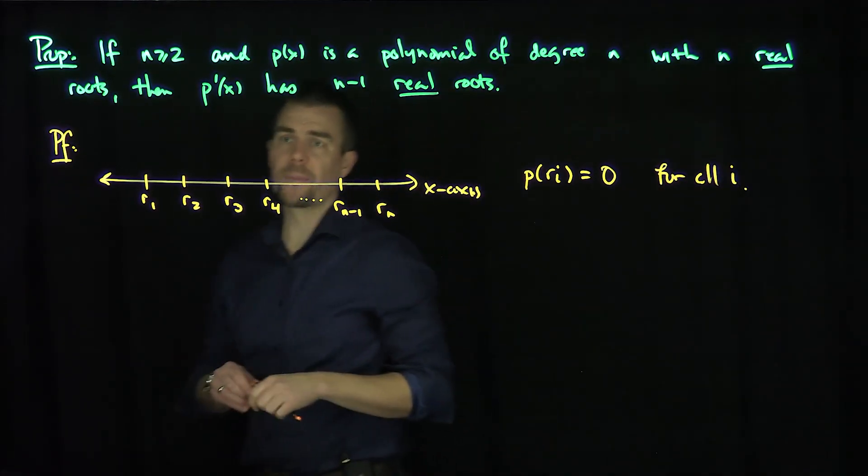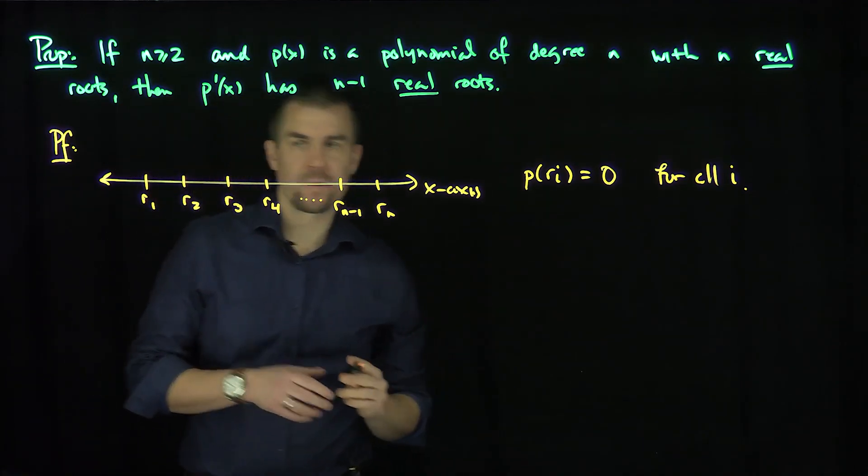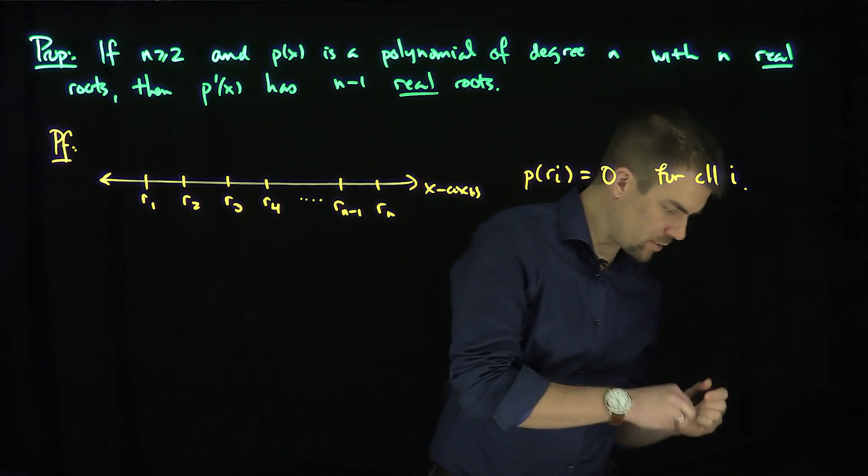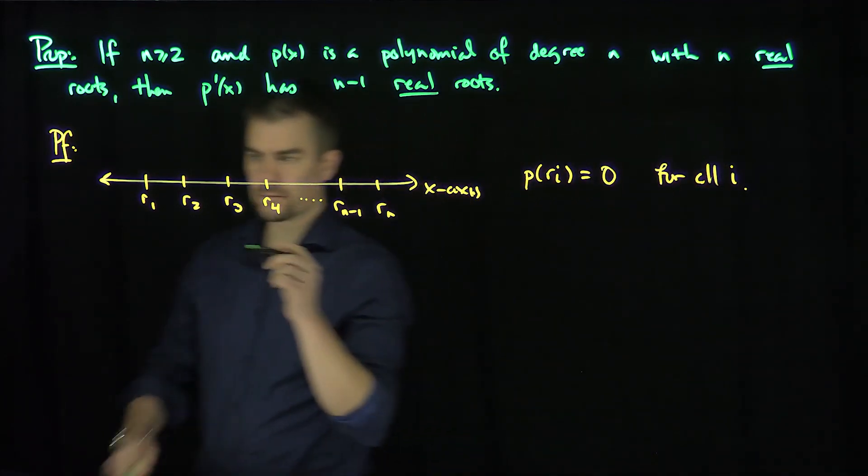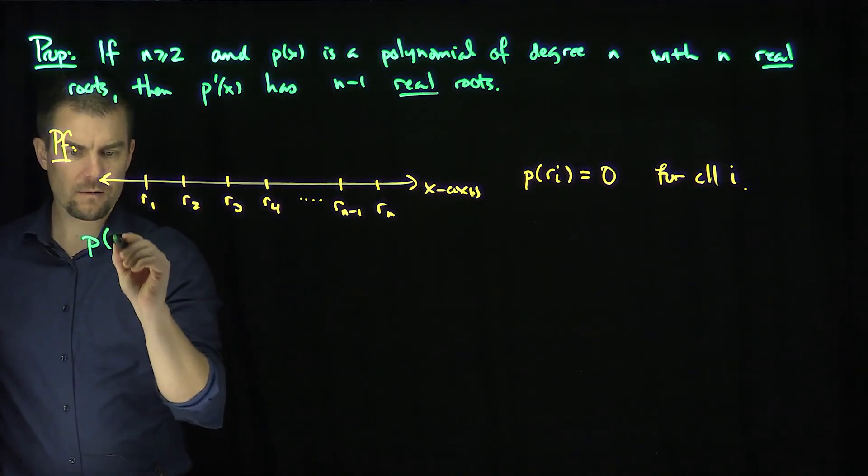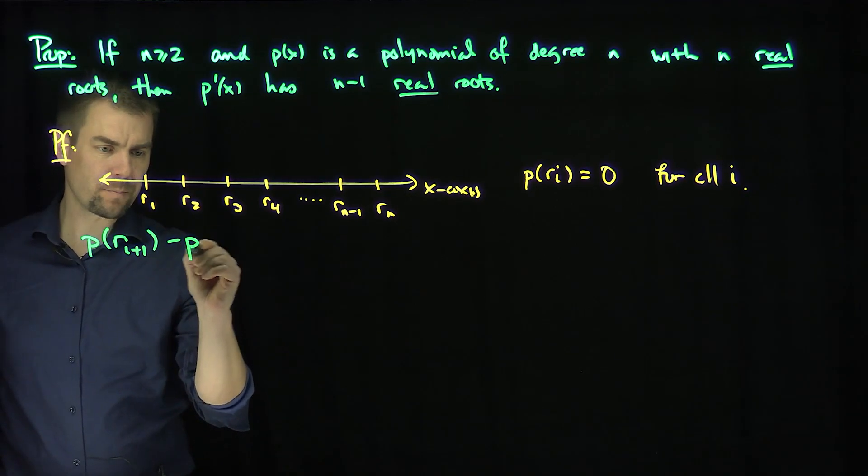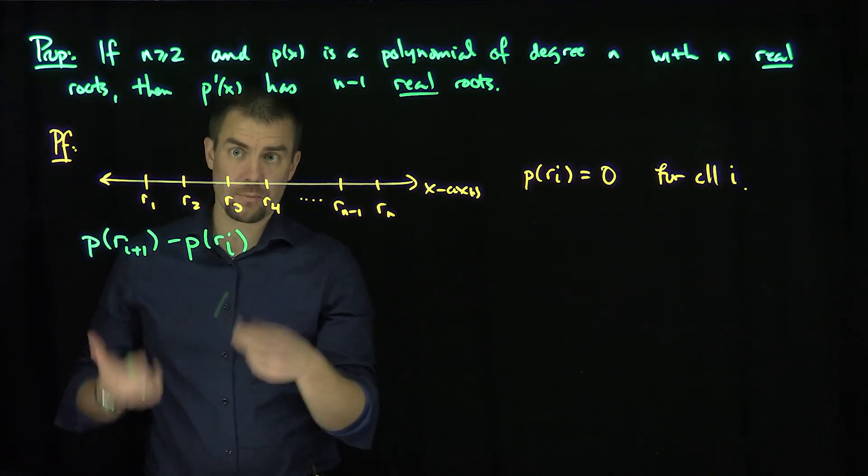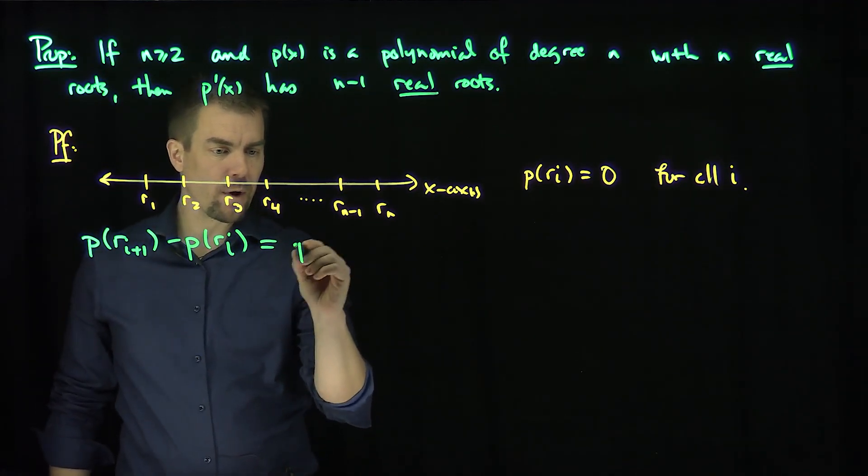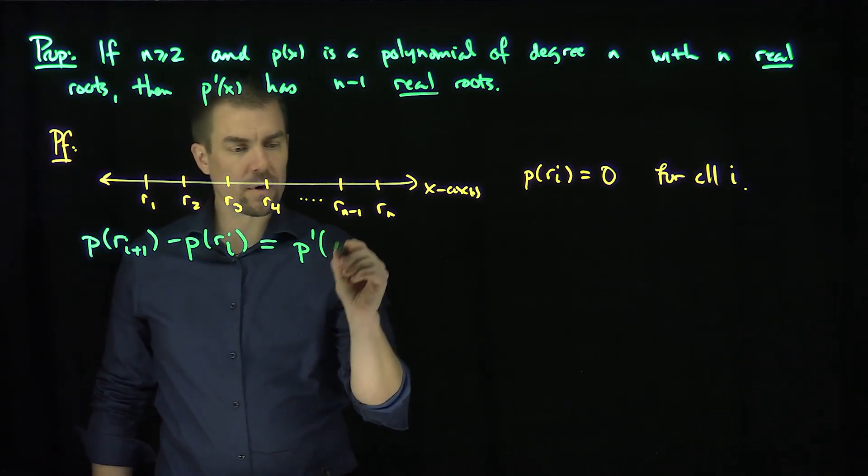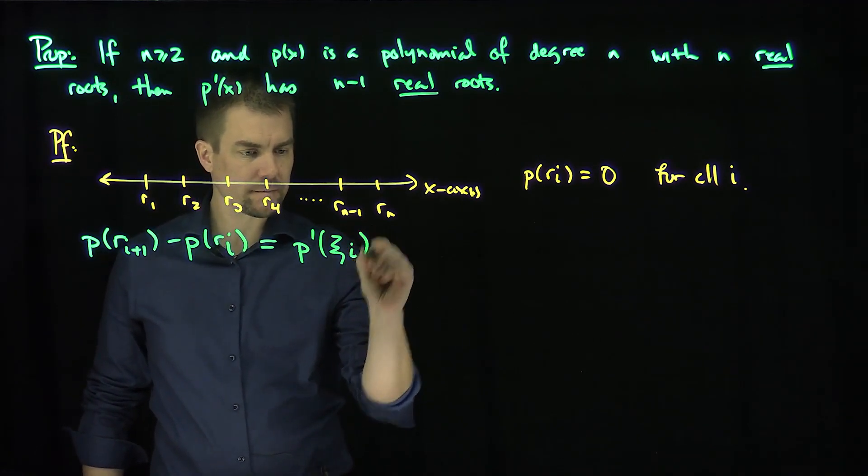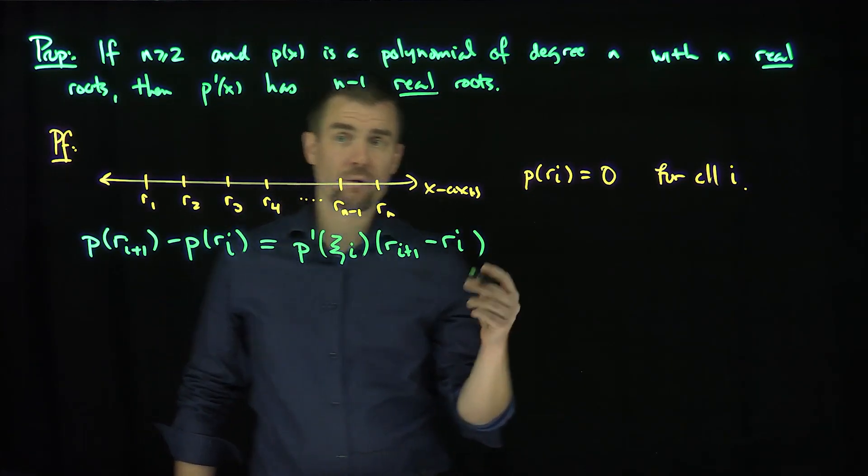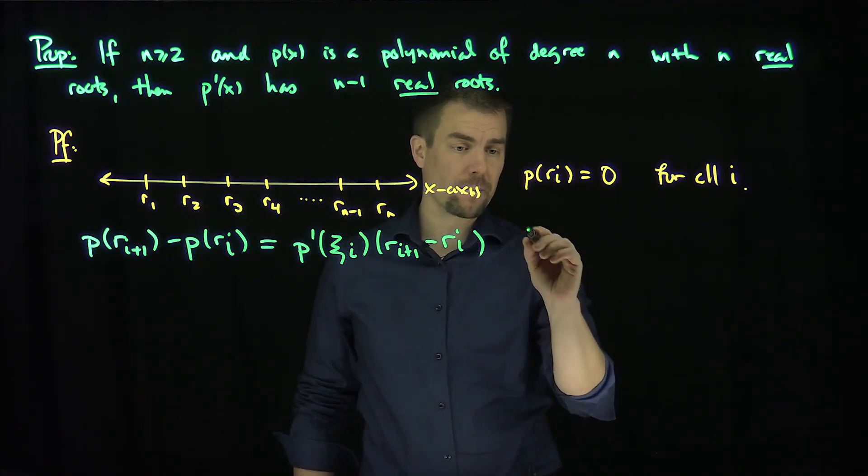Okay? There are my n real roots. Now I'm going to make the following observation. For any two consecutive roots, i and i plus 1, note what we can do is this: p(r(i+1)) minus p(ri), well that's 0 and that's 0 because they're roots, but this has to be equal to p'(xi) times r(i+1) minus ri. And over here, I've just used the Mean Value Theorem.